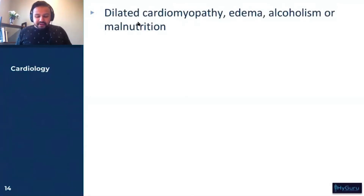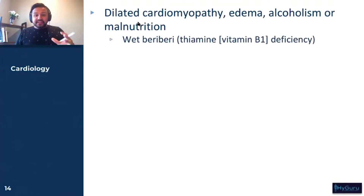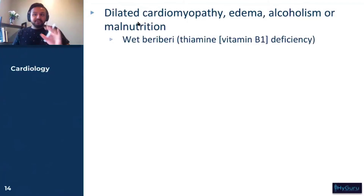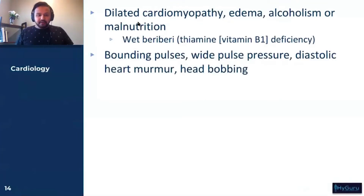Here's our first one: dilated cardiomyopathy, edema, alcoholism, or malnutrition. This is going to be wet beriberi. Wet beriberi is related to a thiamine deficiency, vitamin B1. This will present on your USMLE as somebody with heart failure. Watch for alcoholism in the vignette, bounding pulses, wide pulse pressure, a diastolic heart murmur, and head bobbing.